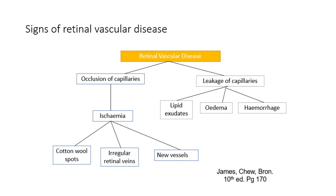Looking along the left side of the diagram, if you have occlusion of capillaries, the retina will develop ischemia and this in turn will cause cotton wool spots, irregular retinal veins and new vessels. I'll go through these things in the next few slides.